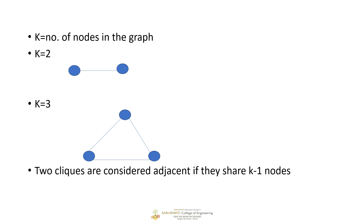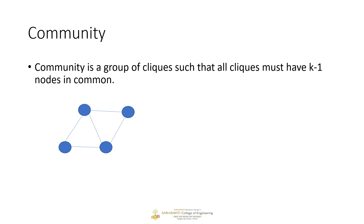Two cliques are called adjacent cliques if they share k-1 nodes. A community is a group of cliques that have k-1 nodes in common.